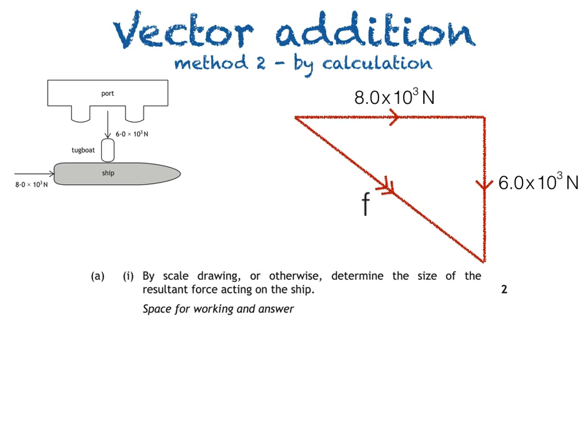If I want to find the resultant force—we'll call it F—mathematically, then we can use Pythagoras. The resultant force is the hypotenuse in a right-angle triangle.